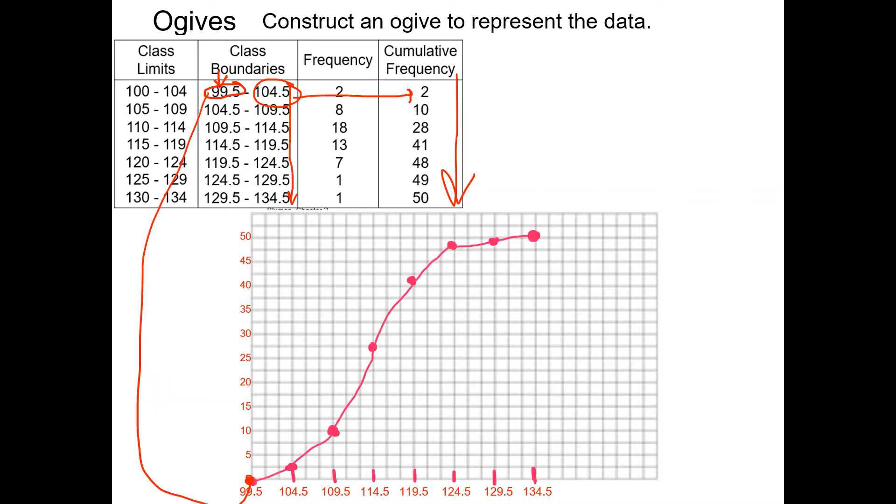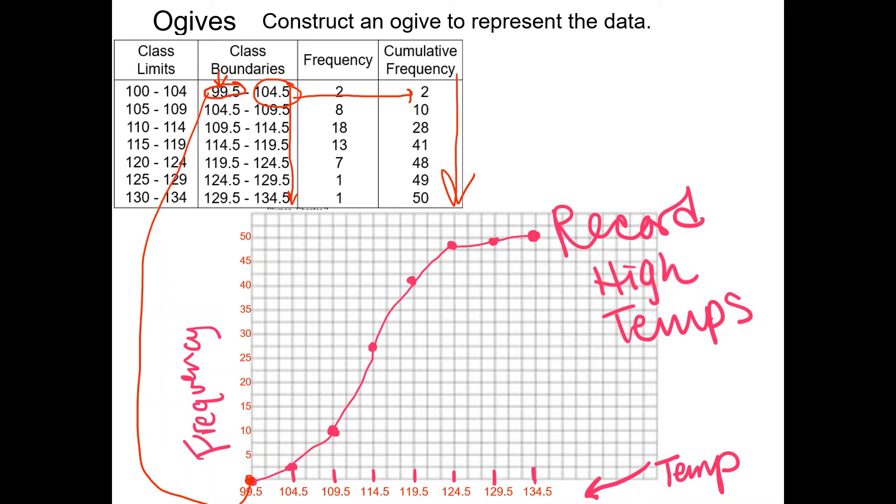And then don't forget to label. So our x-axis is temperature, our y-axis is our frequency again, and our overall title for this whole thing is record high temps because it was the same example that we did. So that's all that I have. So just make sure you get to understand the subtle differences between these two because for your homework assignment, you're going to try to make both. So I want two examples of an ogive, and I want two examples of a frequency polygon.